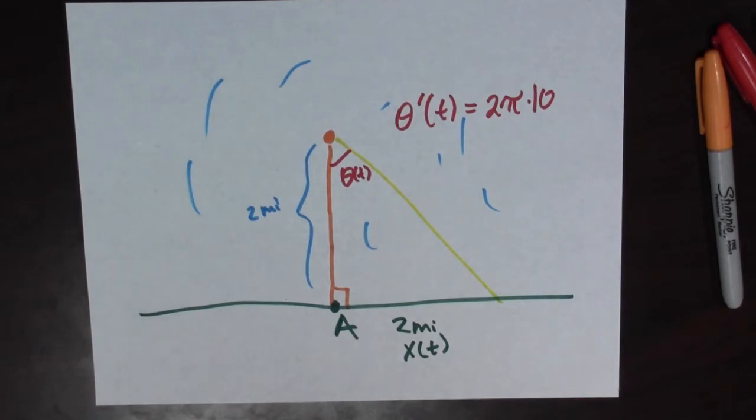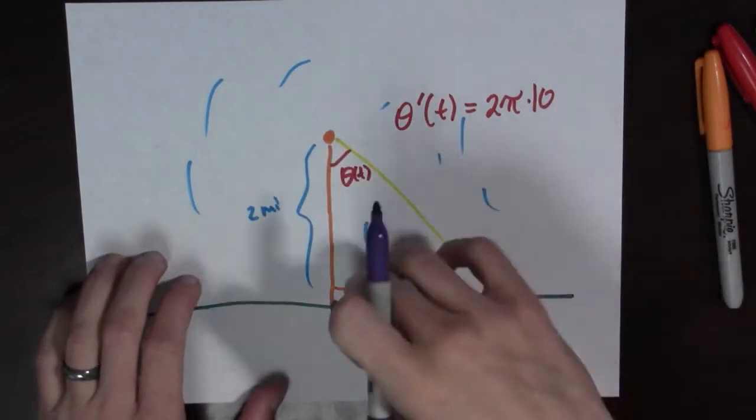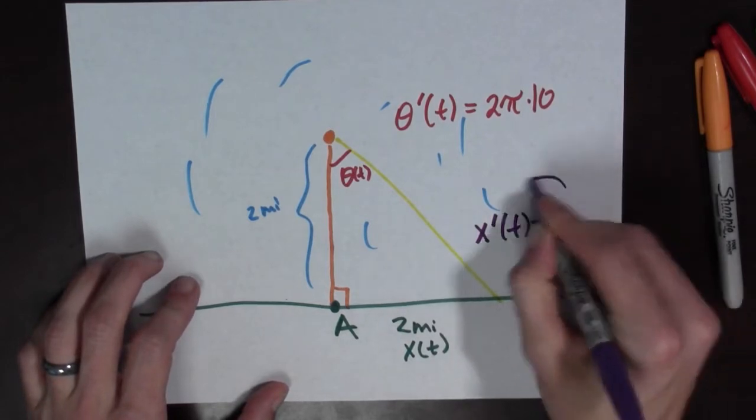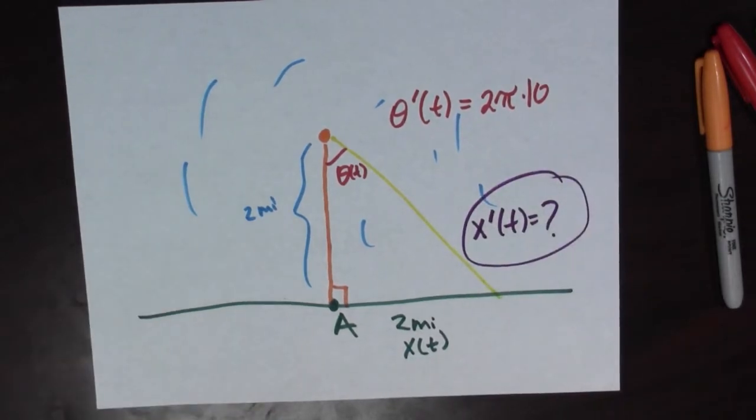What do we want to know? Well, we want to know how fast this beam of light appears to be moving so we want to know x'(t). That's what we want to know.